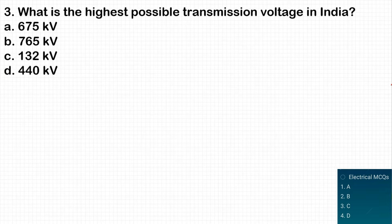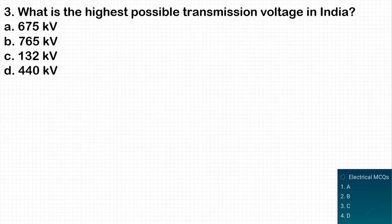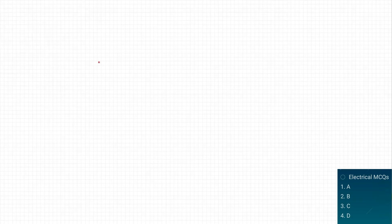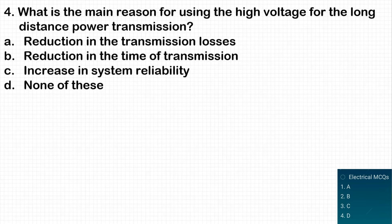The next question: what is the highest possible transmission voltage in India? This is a very well-known question asked in different examinations. The highest possible transmission voltage in India is 765 kV, so option B is the correct answer.